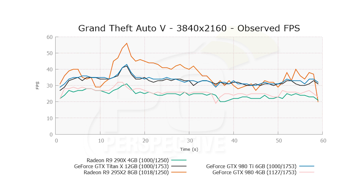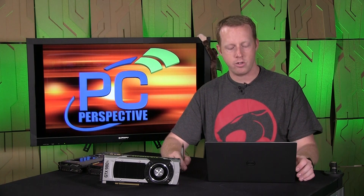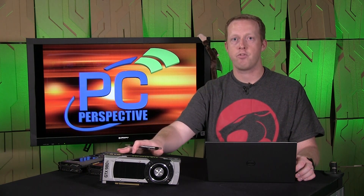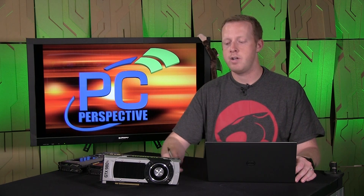Compared to AMD's highest-end single GPU graphics card, the Radeon R9 290X, you're looking at anywhere from 40 to 50% faster. So you're going to get a significant performance boost here with the 980 Ti over the 290X.